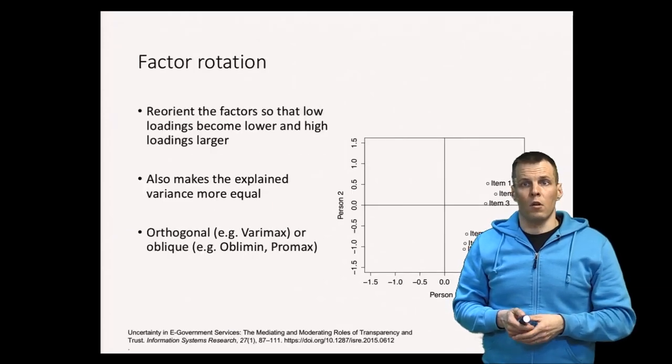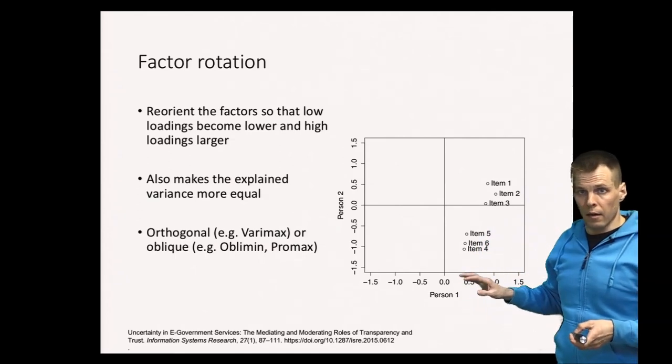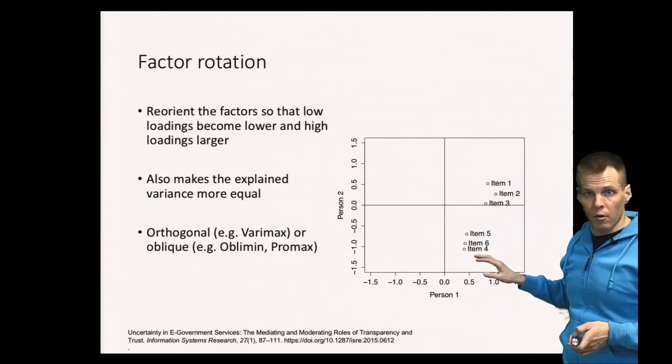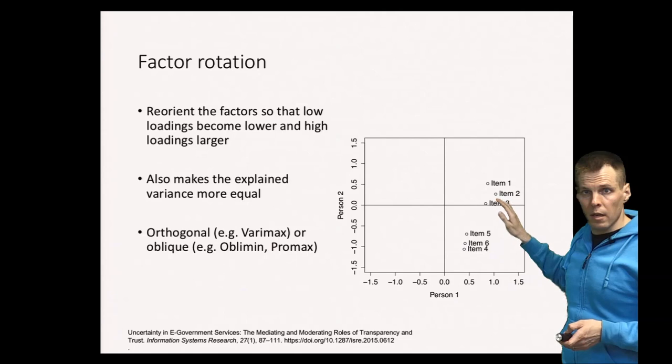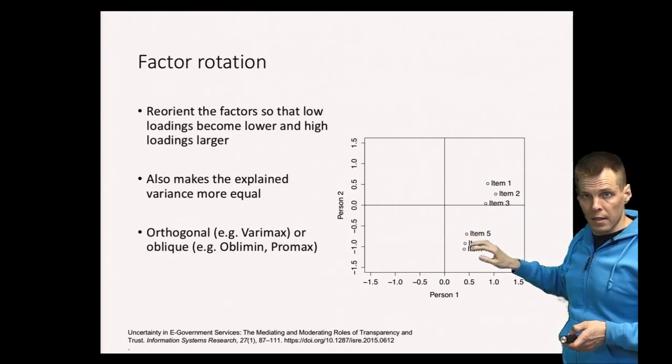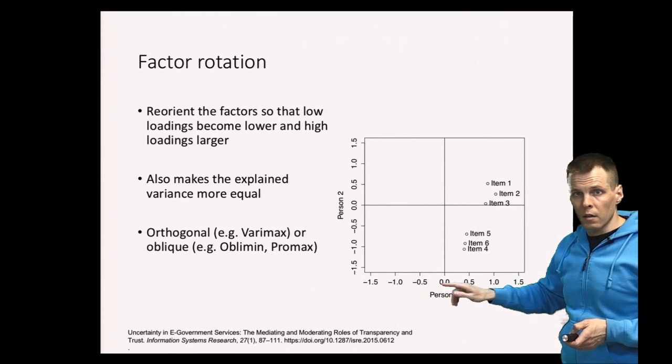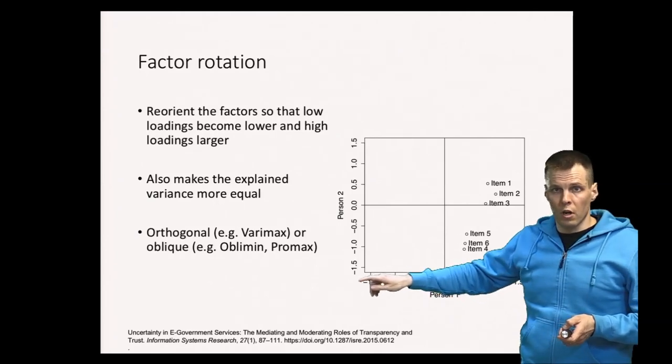What the factor rotation achieves is that it takes the indicators first. So let's assume we have six indicators: items 1, 2, 3 vary together. Items 4, 5 and 6 vary together. So this is the score of person number 1 and this is the score of person number 2 here.